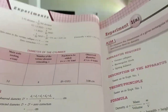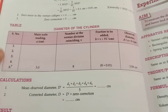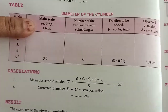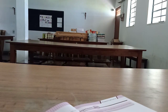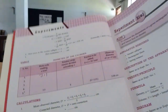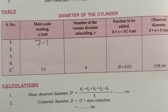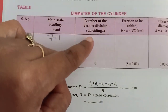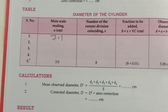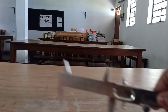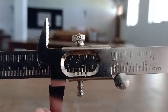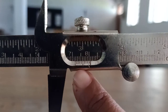In the table we have to fill, the first thing is the main scale reading. You are going to write seven point one centimeter. The second column is the number of vernier divisions coinciding. In this vernier caliper, you can see we have ten divisions in the vernier scale.